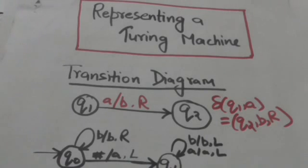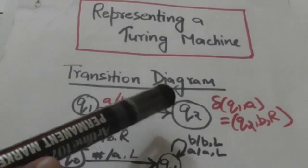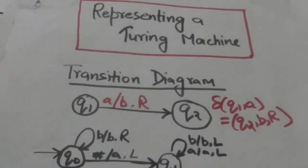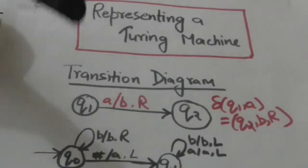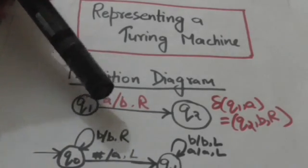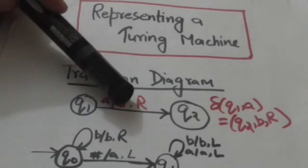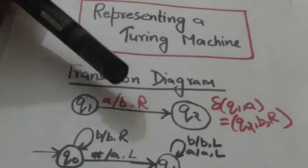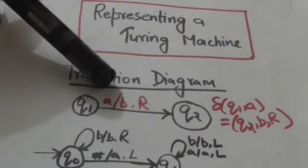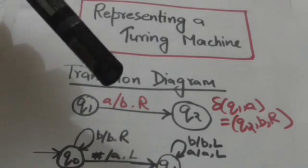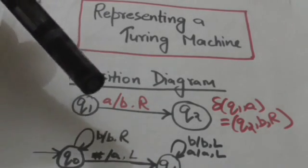To represent this transition in the transition diagram, we draw a directed edge from the node representing state Q1 to the node representing state Q2. This edge is labelled by the tape symbol read (A), slash the replacement tape symbol (B), comma, and the direction of head movement (R).